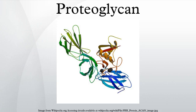The protein component of proteoglycans is synthesized by ribosomes and translocated into the lumen of the rough endoplasmic reticulum. Glycosylation of the proteoglycan occurs in the Golgi apparatus in multiple enzymatic steps. First, a special link tetrasaccharide is attached to a serine side chain on the core protein to serve as a primer for polysaccharide growth. Then sugars are added one at a time by glycosyltransferases. The completed proteoglycan is then exported in secretory vesicles to the extracellular matrix of the tissue.